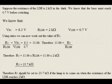Therefore, R1 should be set to 23.7 kOhms if the lamp is to come on when the resistance of the LDR reaches 2 kOhms.